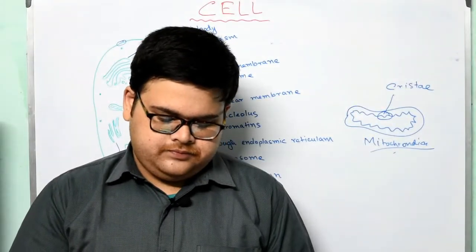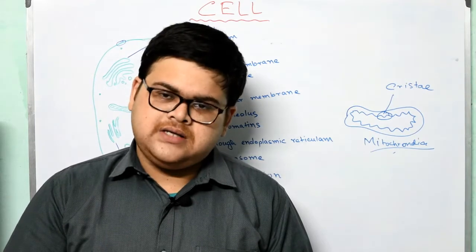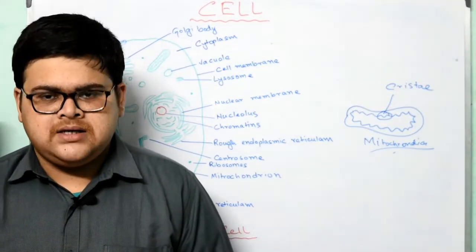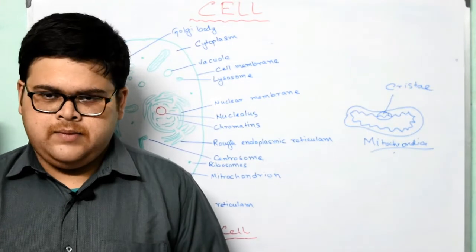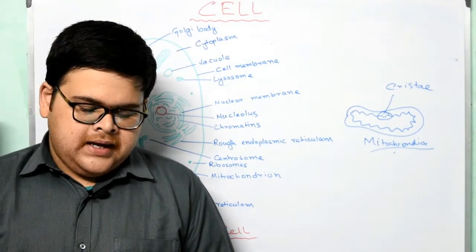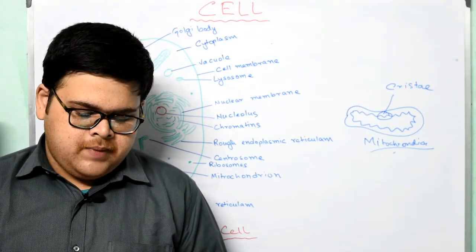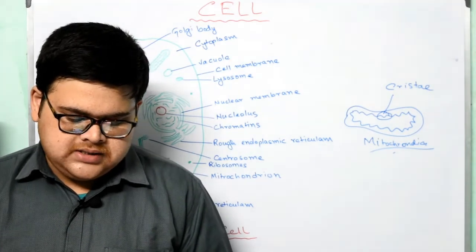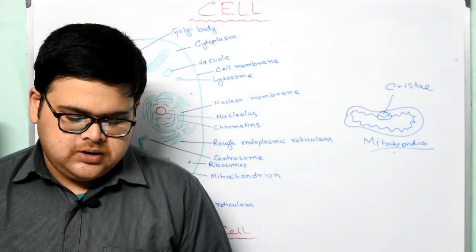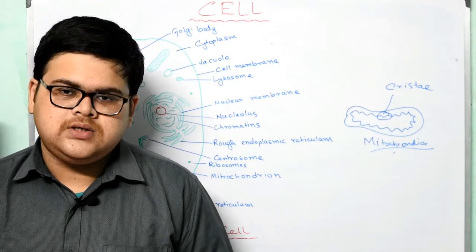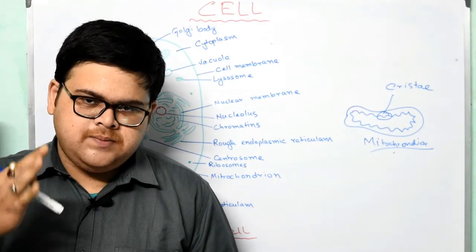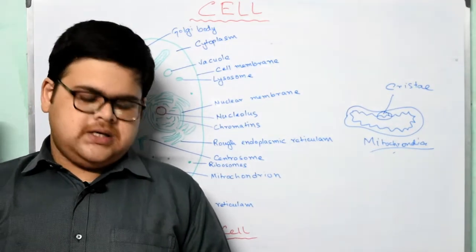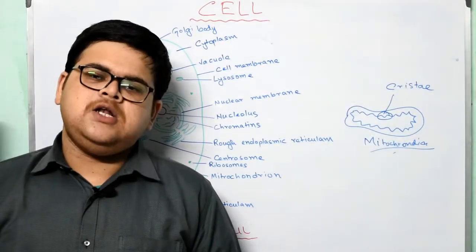Plastids are found in plant cells, not in animal cells. They are bound by a double membrane and can be oval, spherical, or disc-shaped. Based on their colour, they are classified into three types: chloroplast, chromoplast, and leucoplast.